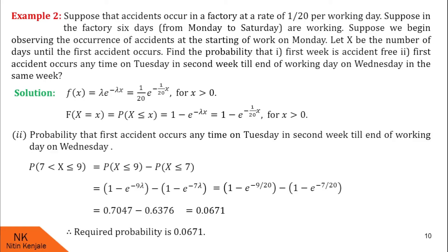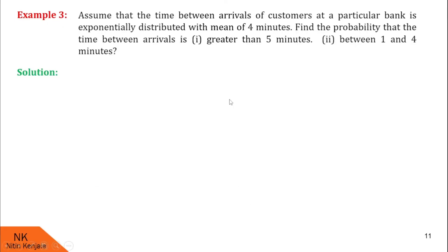Now let us proceed to the next example. Here we assume that the time between arrivals of customers at a particular bank is exponentially distributed with a mean of 4 minutes. We are asked to find the probability that the time between arrivals is: (1) greater than 5 minutes, and (2) between 1 and 4 minutes. Note that since mean = 4, lambda = 1/4, because the formula for mean is 1/lambda.